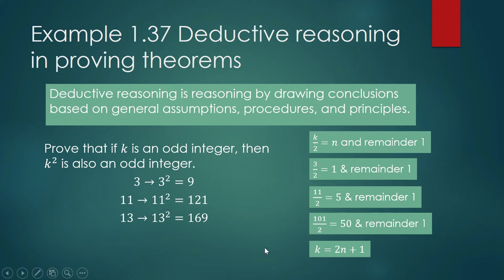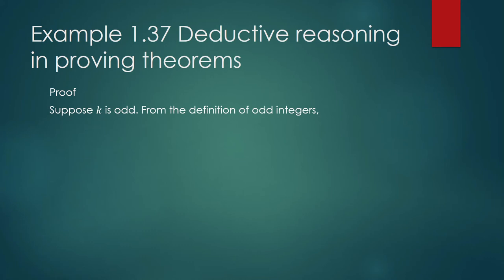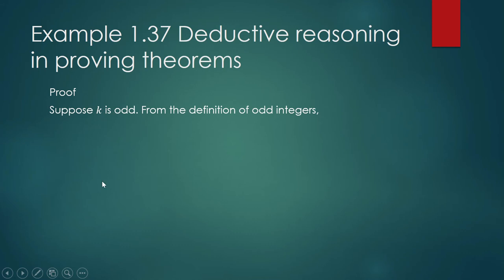Now let us prove this. You begin your proof by writing the word 'Proof,' stating what is given, and writing down the definition. We shall write our proof in paragraph form — writing in column form is for junior high school; in college you write in paragraph form. So: suppose k is odd. Then from the definition of odd integers, k = 2n + 1 for some integer n.